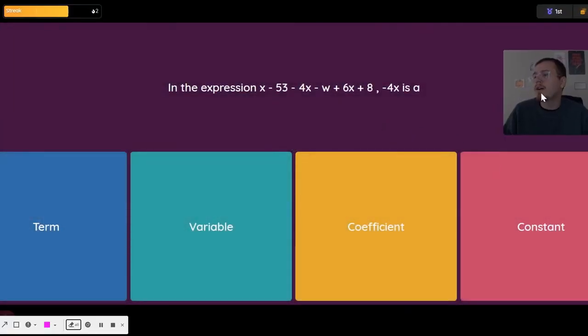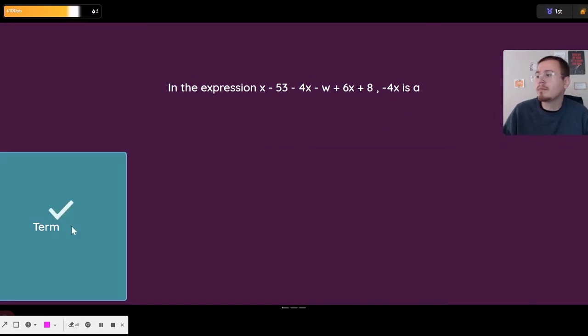And negative 4x is a term. It has a variable in it, it has a coefficient in it, but it's a term.